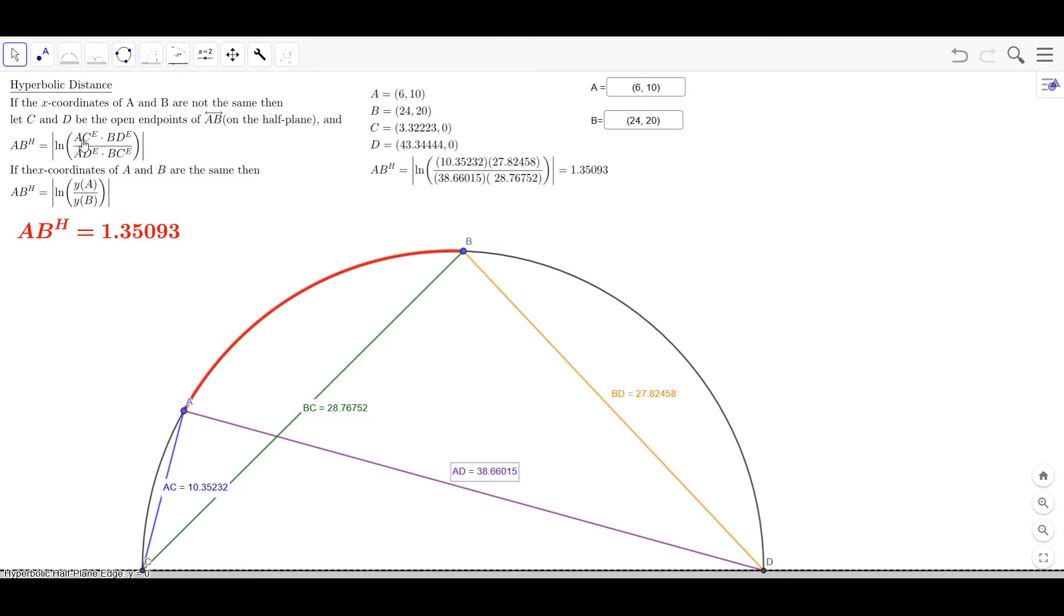You take the Euclidean distance from A to C times the Euclidean distance from B to D divided by the distance from A to D times the distance from B to C.